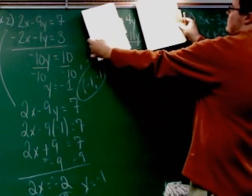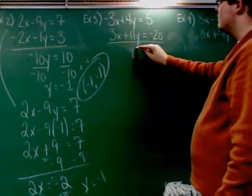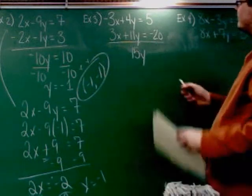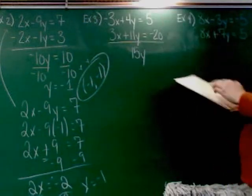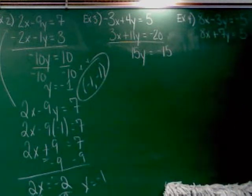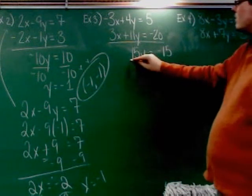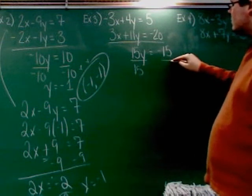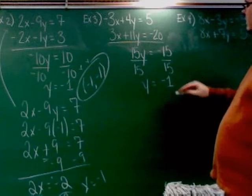Next thing I would have would be four Y and 11 Y. I add those up and that's 15 Y. And I've got five and negative 20, which makes negative 15. So I've got 15 Y equals negative 15. I've got to divide each side by what? 15. Good. Do that and I get Y equals negative 1.